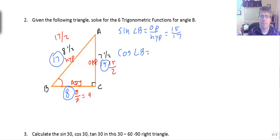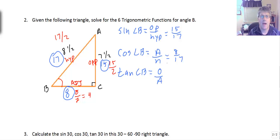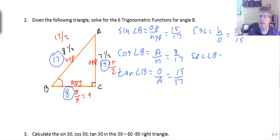Cosine of angle B, using SOHCAHTOA, is the adjacent over hypotenuse = 8/17. Tangent of angle B is opposite over adjacent = 15/8. Cosecant of angle B is hypotenuse over opposite = 17/15. Secant of angle B is hypotenuse over adjacent = 17/8. And the cotangent of angle B is adjacent over opposite = 8/15.